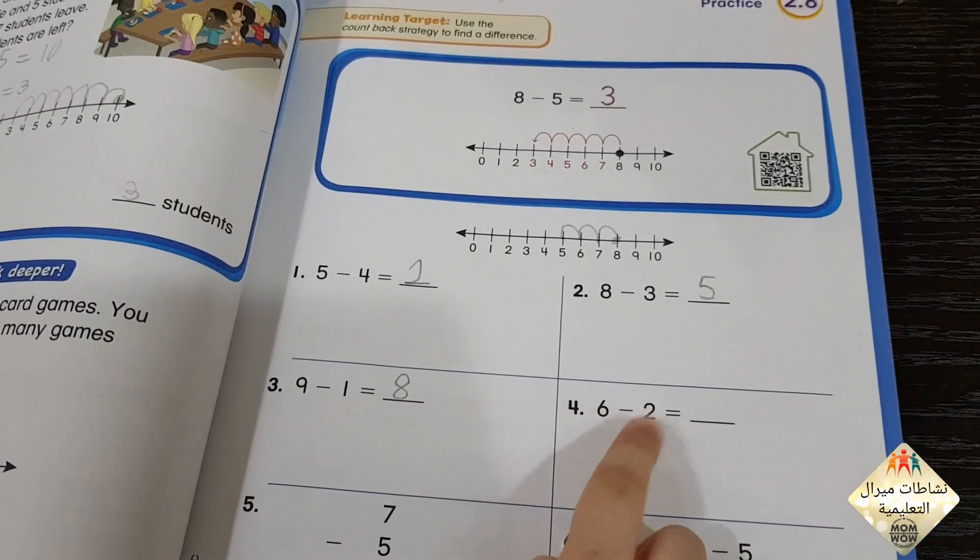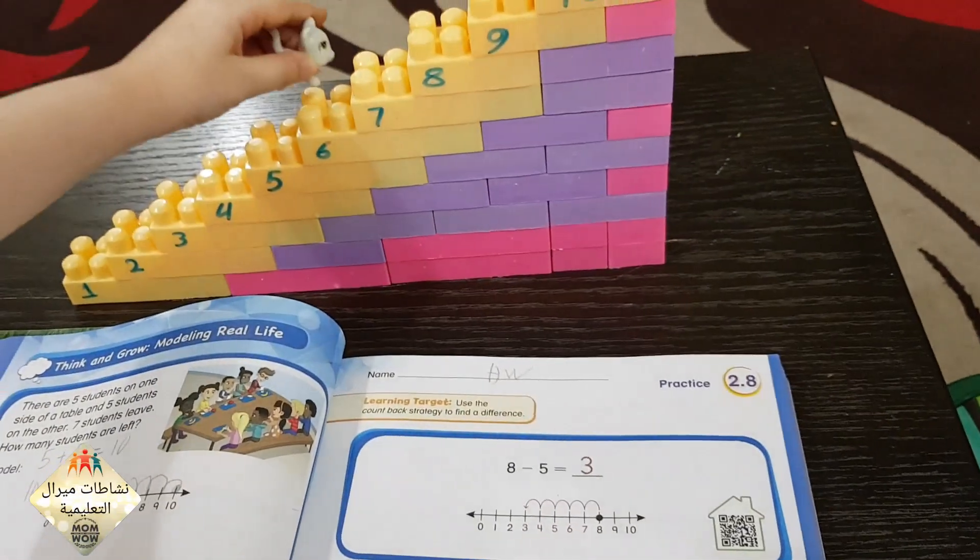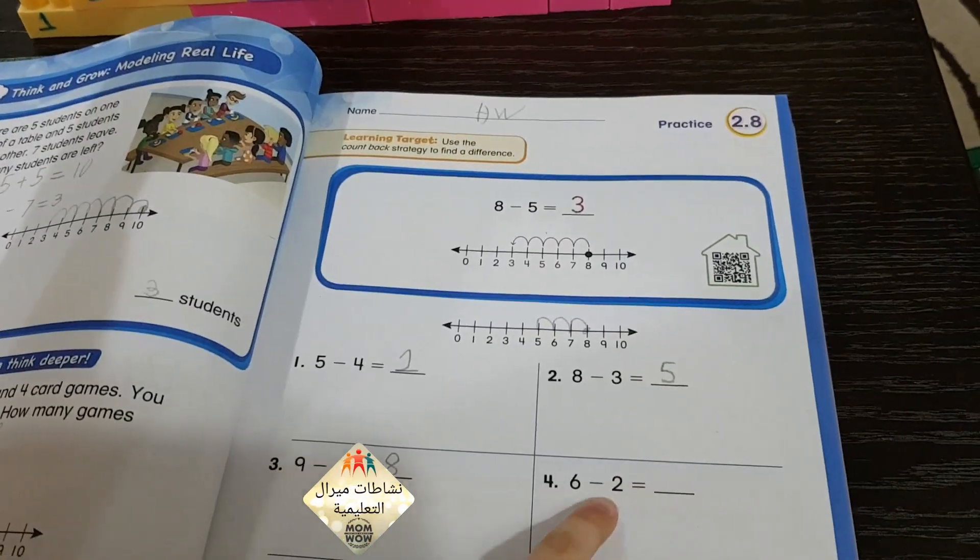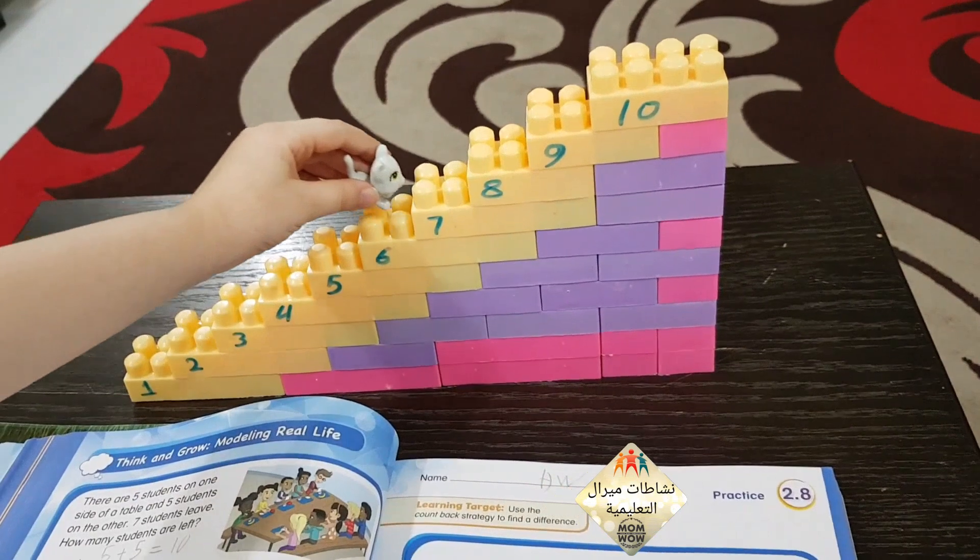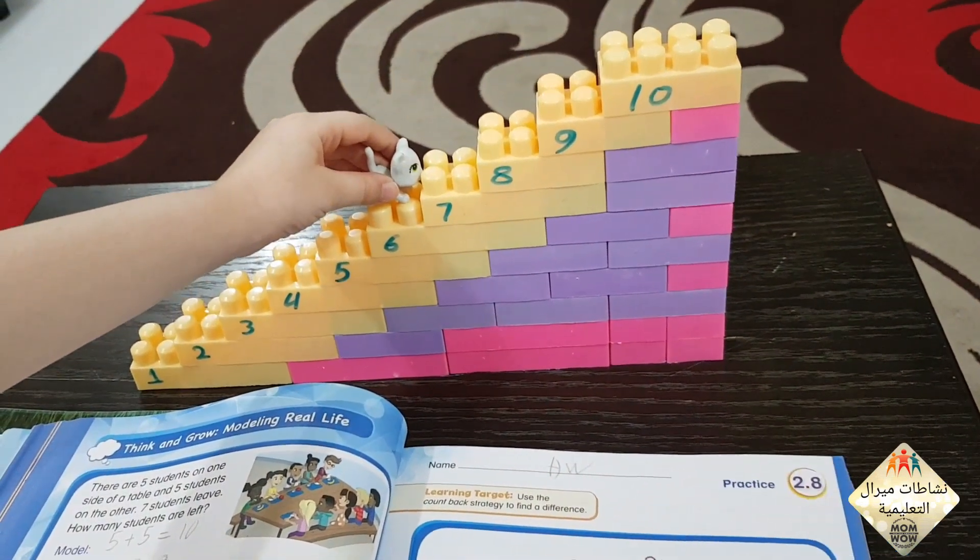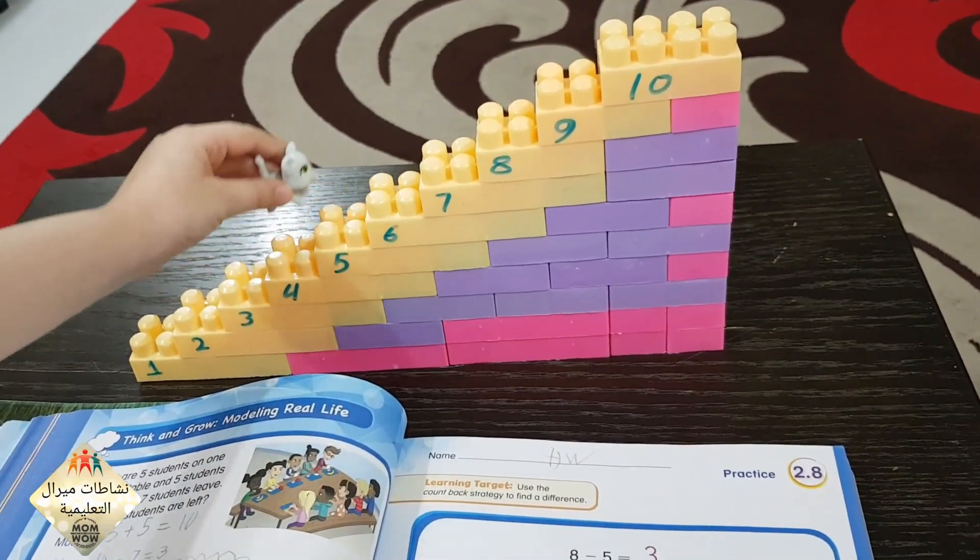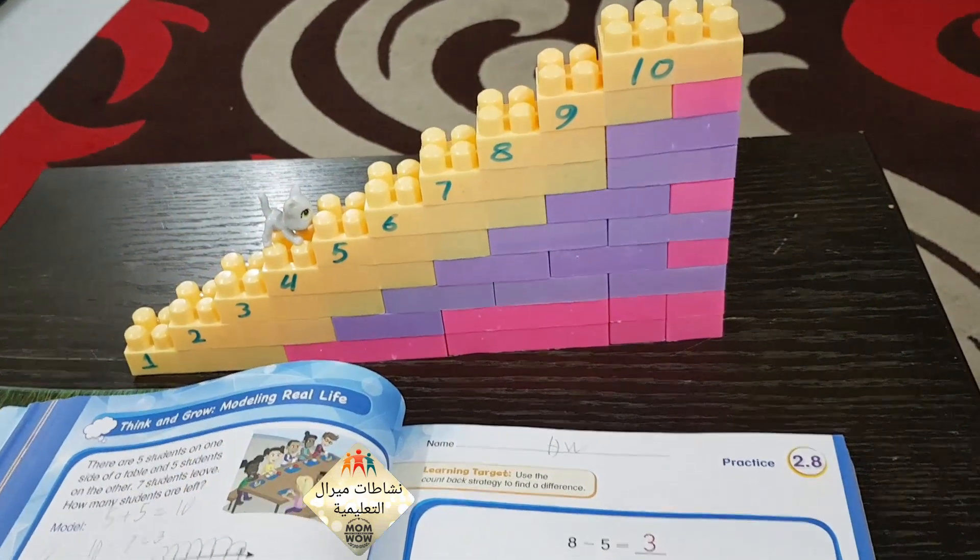Now 6 minus 2. We will stand on 6. Minus 2, we will go back 2 times: 1, 2. Equals 4.